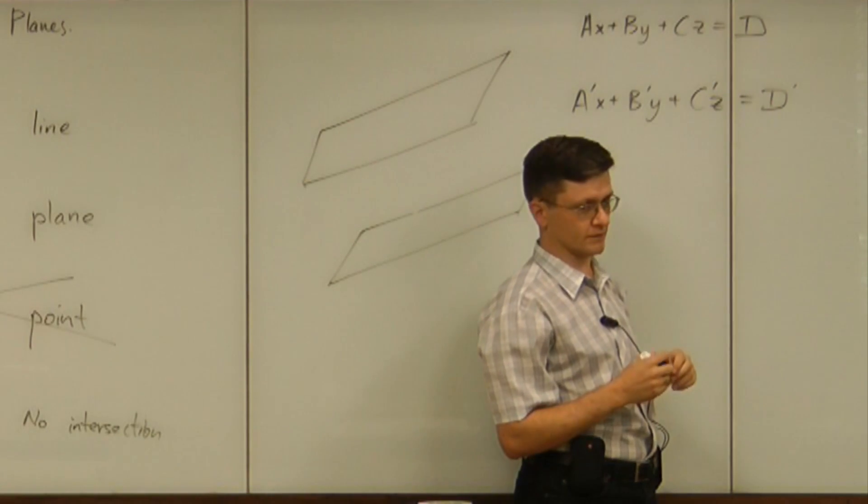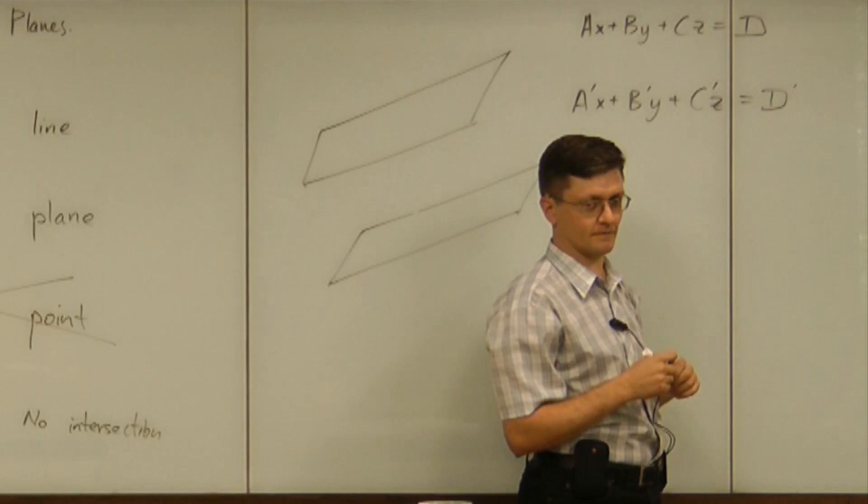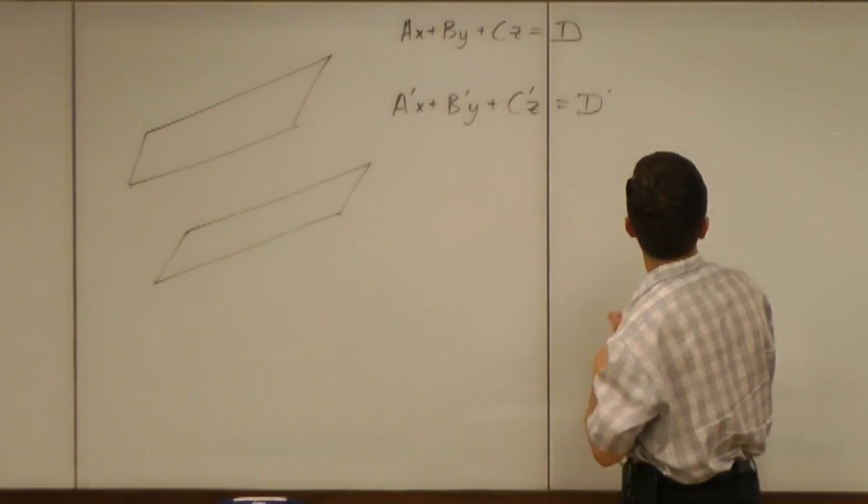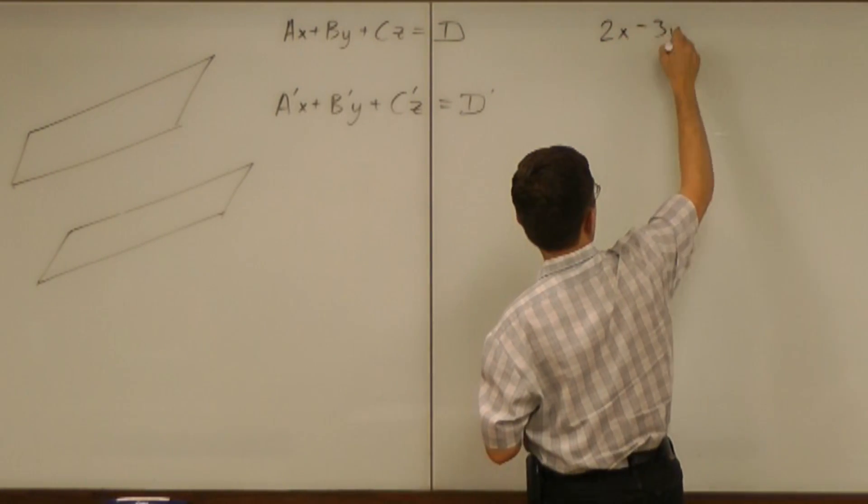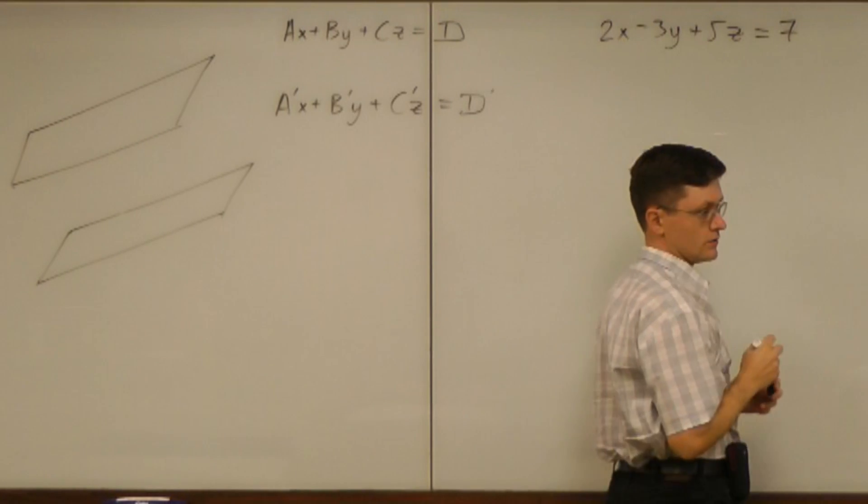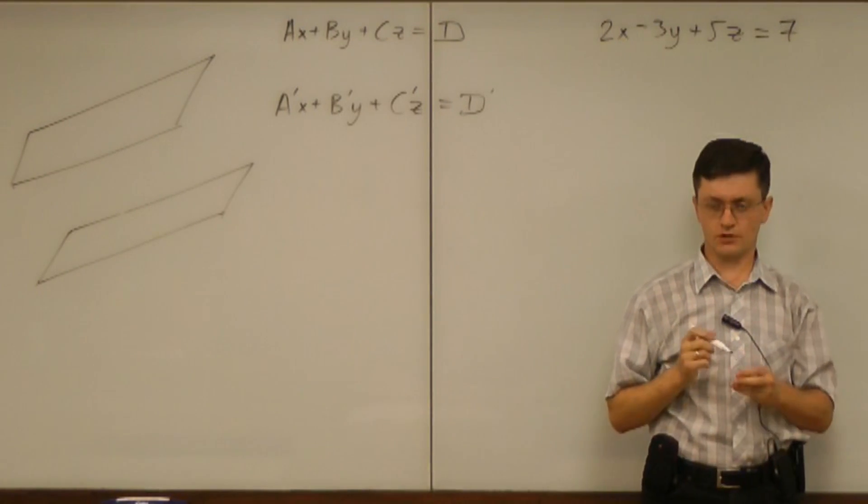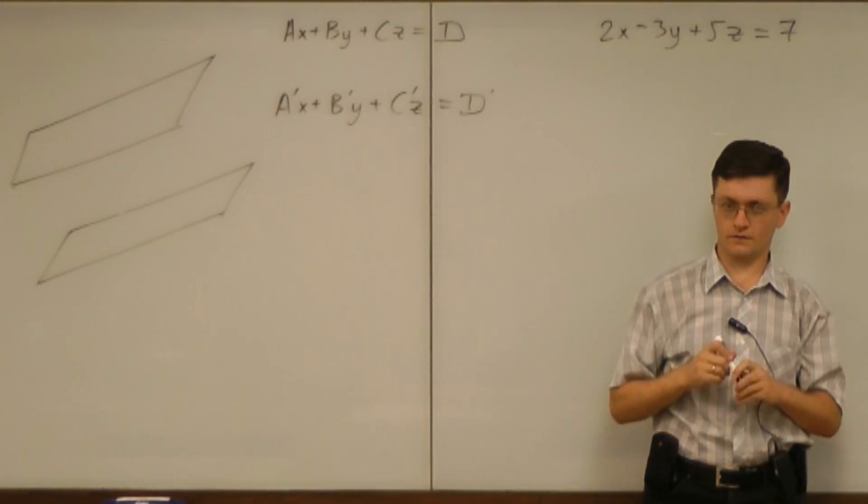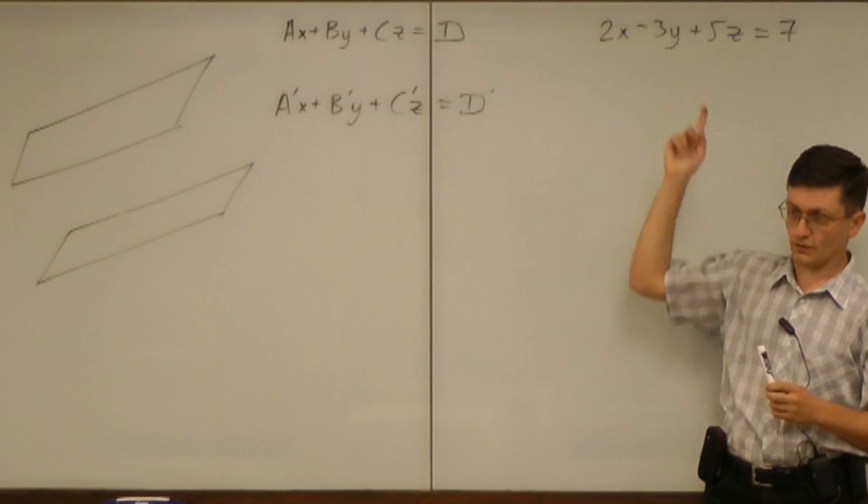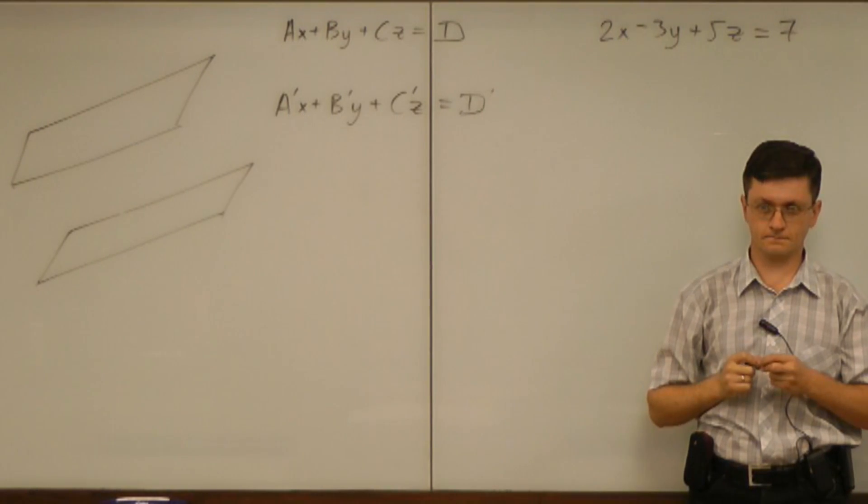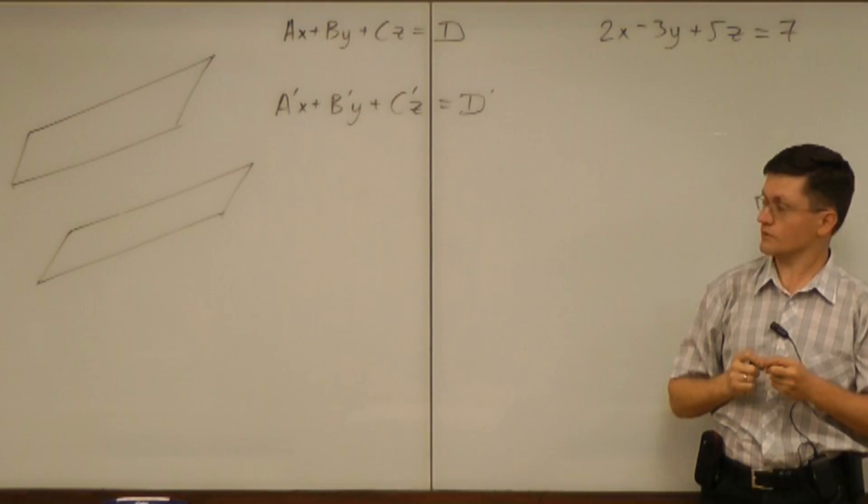That means we have to focus on the constant D. What's the meaning of D? What's the meaning of that number? 2x minus 3y plus 5z equals 7. What's the meaning of 7? Geometric meaning of number 7, irrespective of that plane. Distance to the origin.